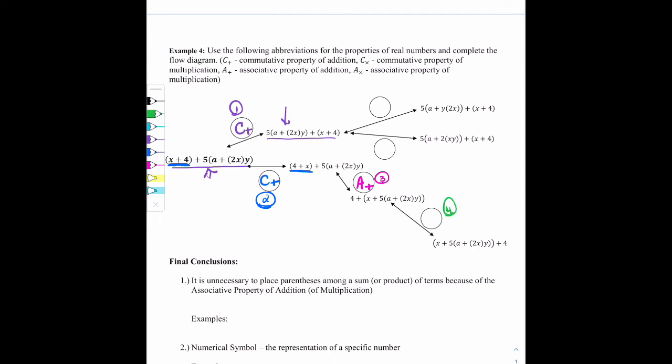All right. Let's look at this as our fourth spot. Looking at these two, I see that the 4 that was in front has now been moved to the back. So that's a change in order with addition. So that's the commutative property of addition.